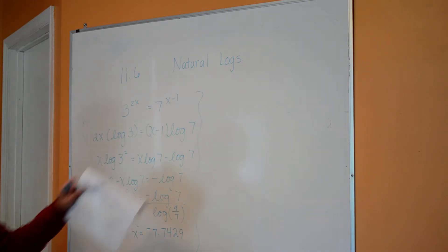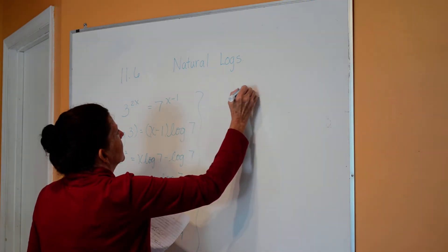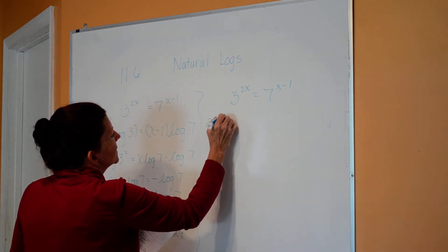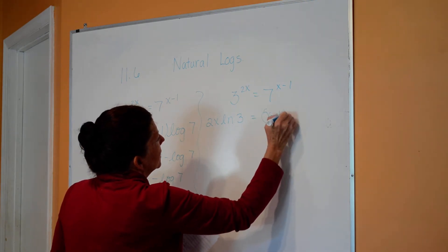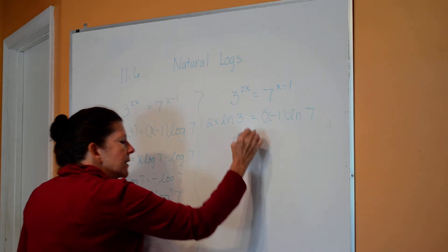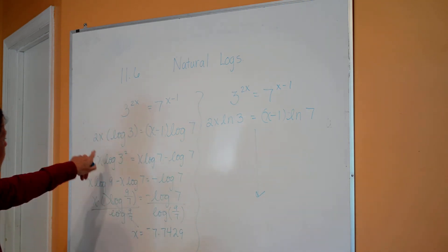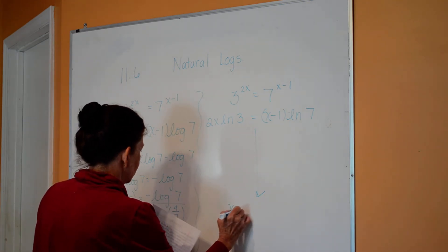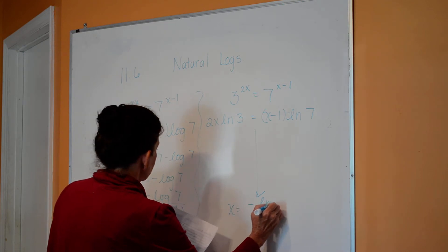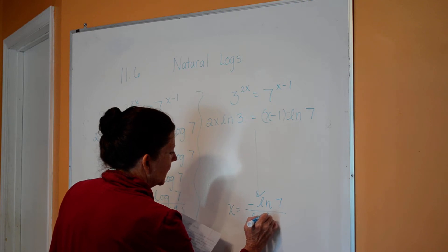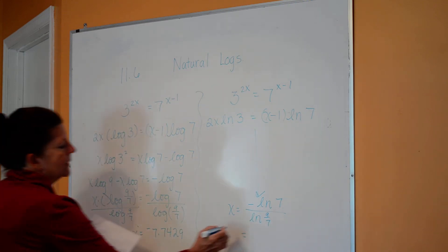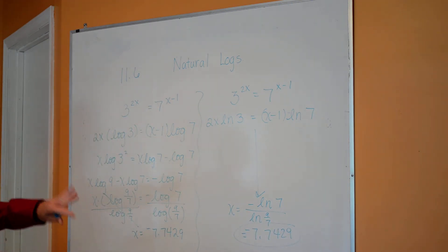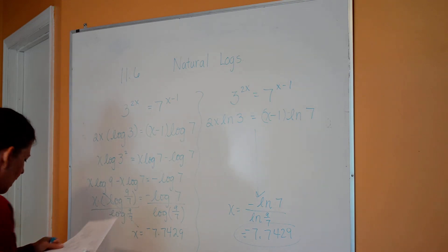That's using the common log. If I use natural log instead, I bring the 2x to the front with ln of 3, and x minus 1 with ln of 7, and continue all the way down — every log becomes a natural log. At the end you get x equals the negative natural log of 7 over the natural log of 9 over 7. You get the exact same answer. So this is purely a preference — natural log or common log.